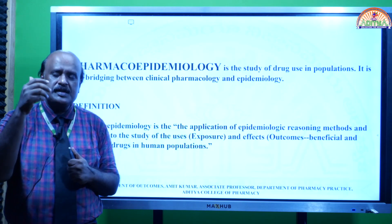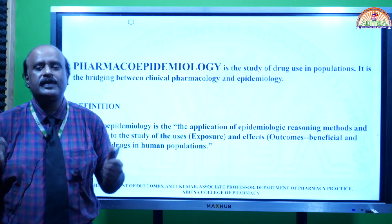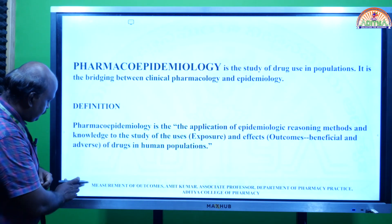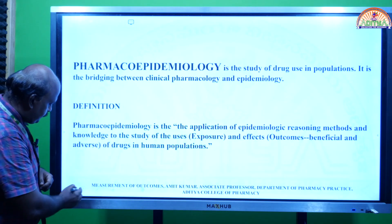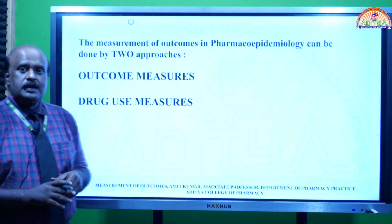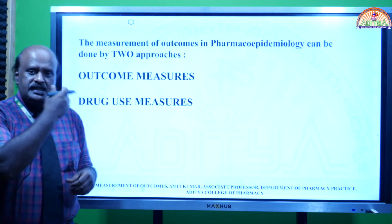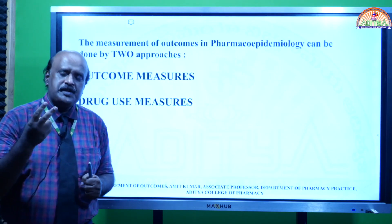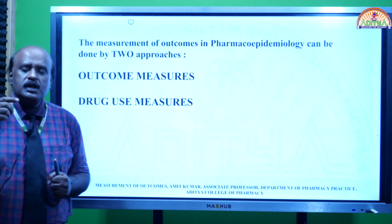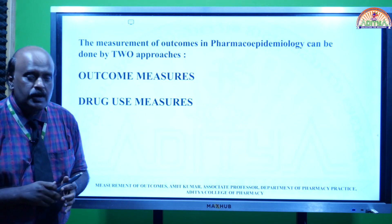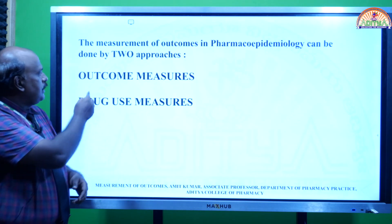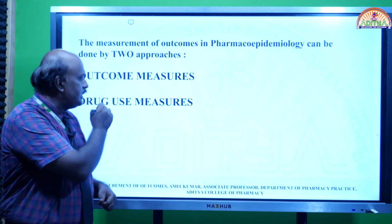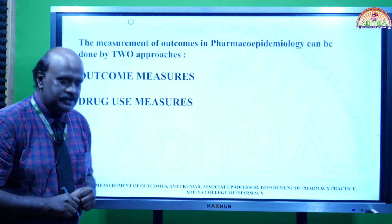As you can see in the slide, there are two different ways to do measurement of outcomes. The first is called outcome measures and the second one is called drug use measures.